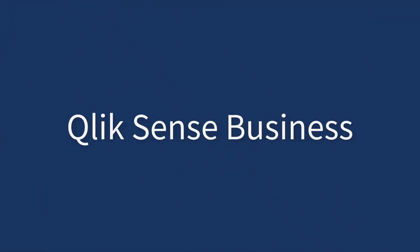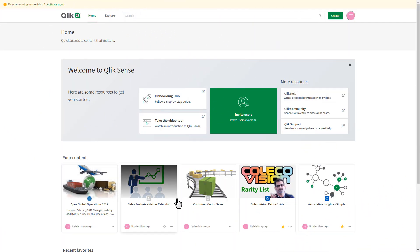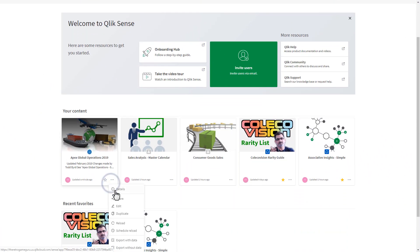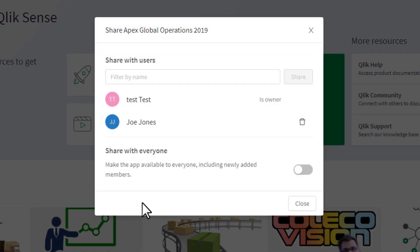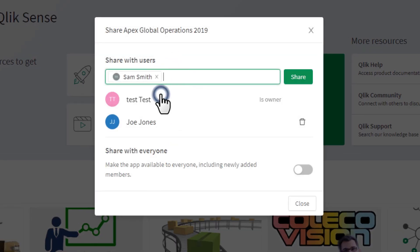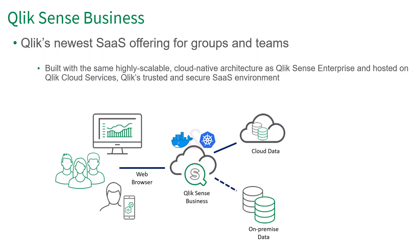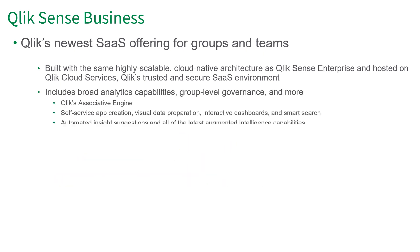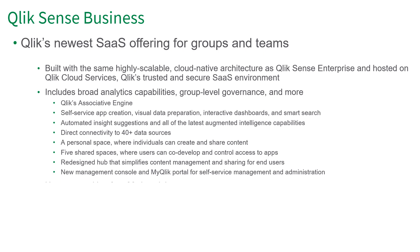Let's take a look. Qlik Sense Business is Qlik's new cloud analytics offering designed for groups and teams around the world, allowing them to create, collaborate, share insights, and turn data into actionable information. Qlik Sense Business shares the same cloud-native architecture as Qlik Sense Enterprise and is hosted on Qlik Cloud Services, Qlik's highly scalable, trusted, and secure SaaS environment.